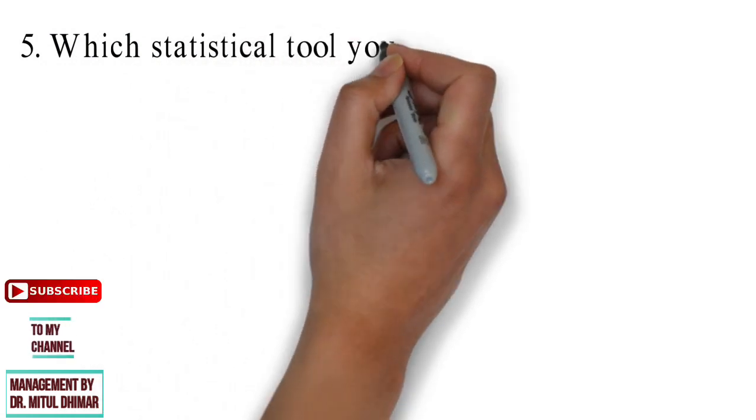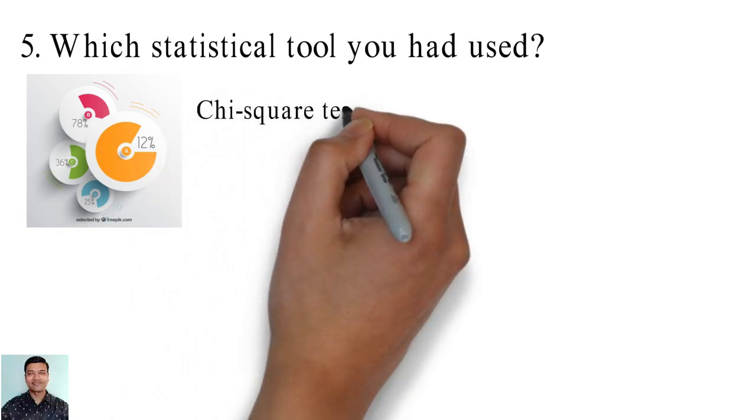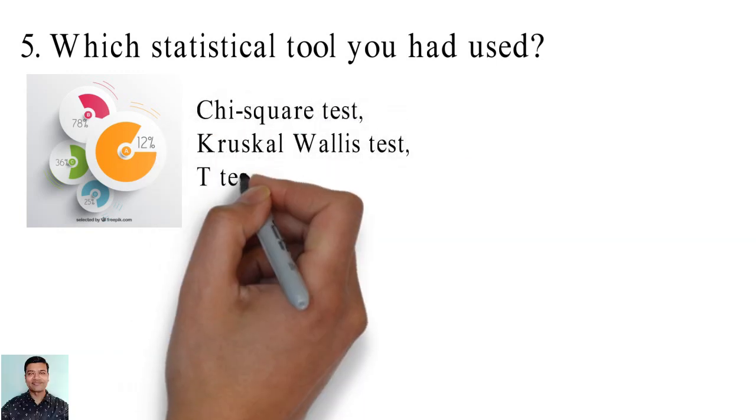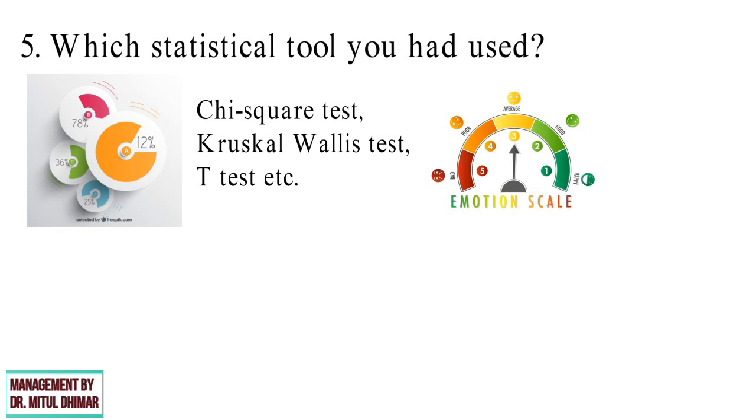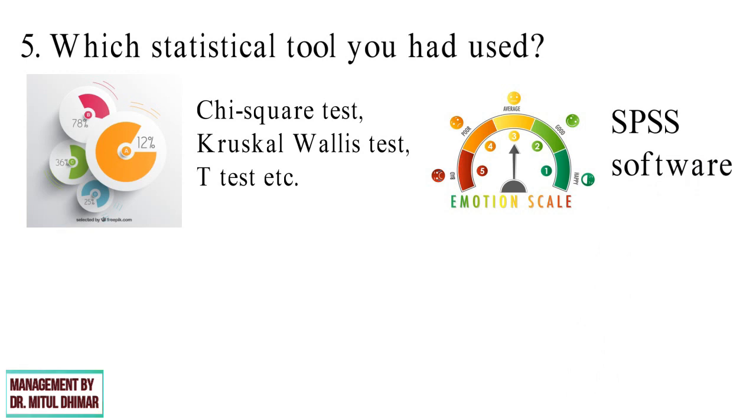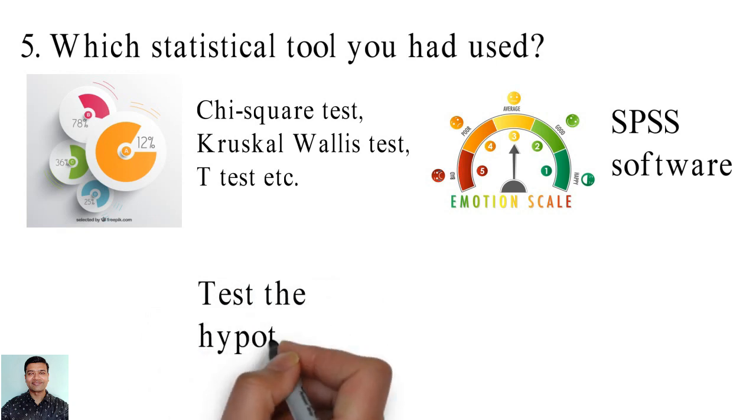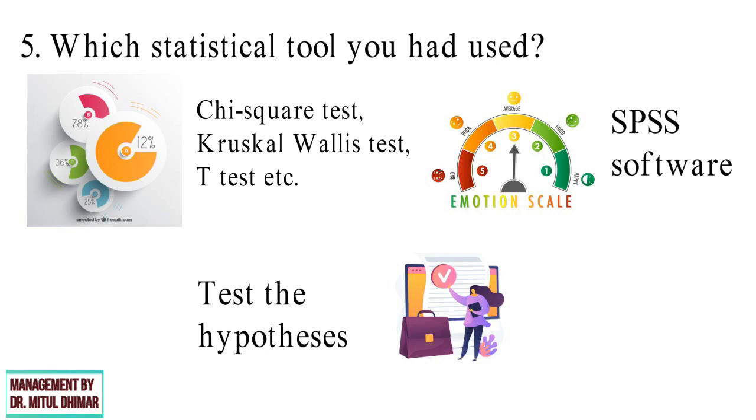Question number 5: Which statistical tool you had used? We can use different types of tests like Chi-square test, Kruskal-Wallage test, T-test, etc. for doing data analysis based on type of questions. Mostly rating scale questions. This test can be done through SPSS software. The purpose of using statistical tests is to answer or test the hypothesis. And through statistical tools we can do validation of outcomes.